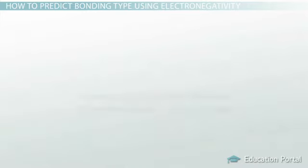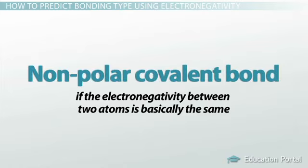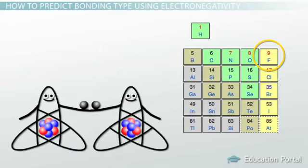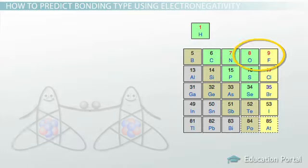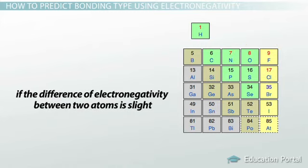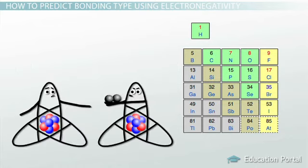Using electronegativity trends, you can determine the type of bond that will form. If the electronegativity between two atoms is basically the same, a nonpolar covalent bond will form. For example, two fluorine atoms have the same electronegativity, so they equally share electrons, forming a nonpolar covalent bond. If atoms are located close together on the periodic table, they will have only a slightly different electronegativity, and a polar covalent bond will form. This slight difference causes one atom to have a stronger pull, making electrons spend more time near the atom with higher electronegativity.